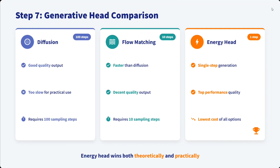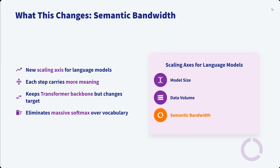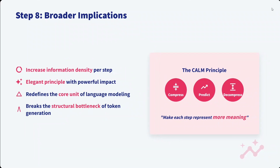For the generative comparison, instead of using diffusion or flow matching they use the energy head — you can check the full comparison in the paper for why the energy head is preferred; it's very fast. This changes what they call semantic bandwidth — a new scaling axis for language models. LLMs can now be very fast because they generate vectors not tokens, keeping the transformer backbone but changing the prediction target and eliminating the massive softmax over vocabulary.